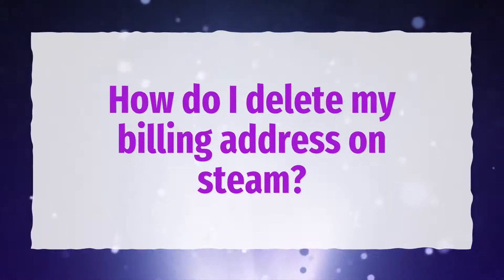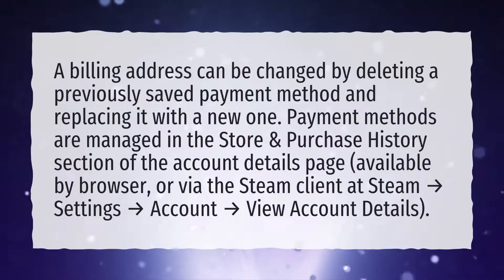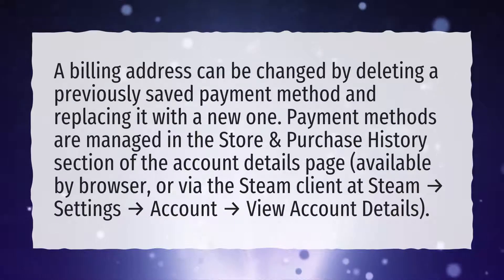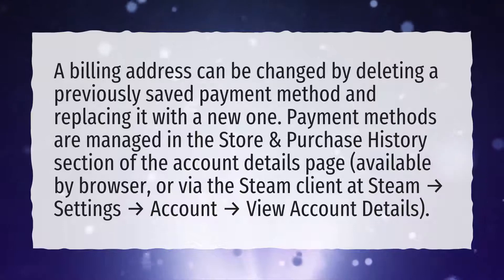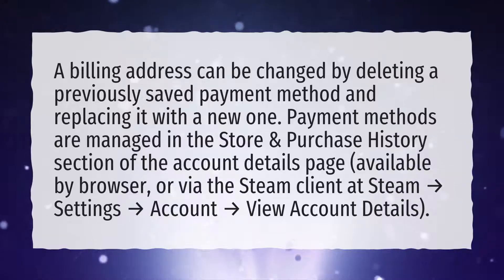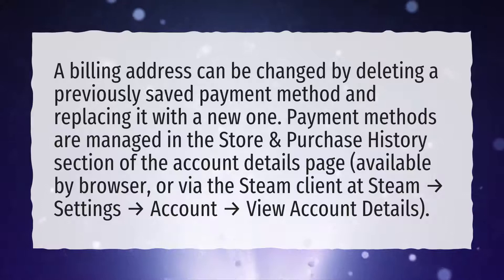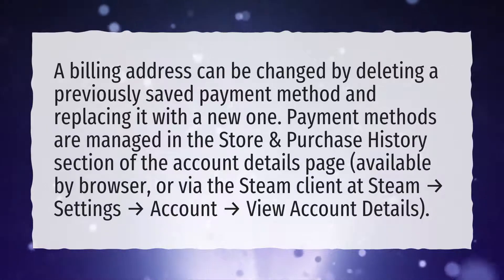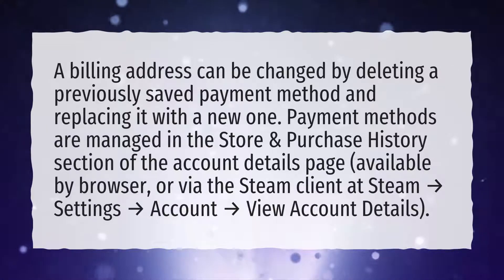How do I delete my billing address on Steam? A billing address can be changed by deleting a previously saved payment method and replacing it with a new one. Payment methods are managed in the Store and Purchase History section of the Account Details page, available by browser, or via the Steam client at Steam > Settings > Account > View Account Details.